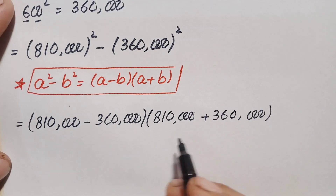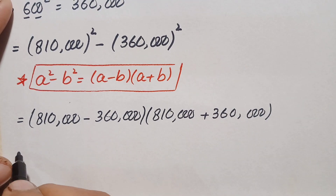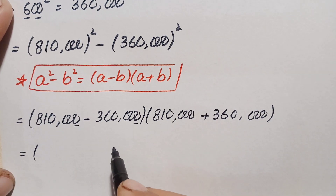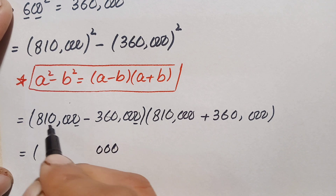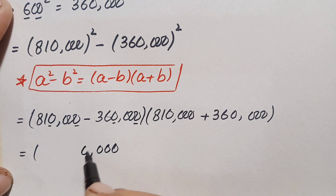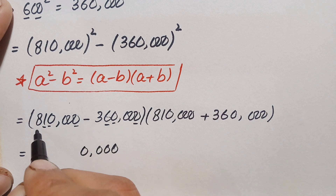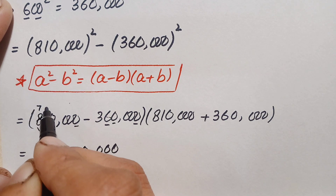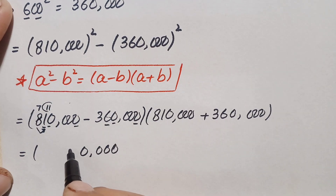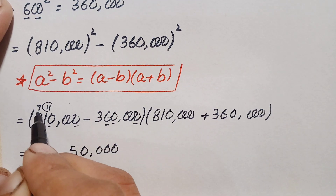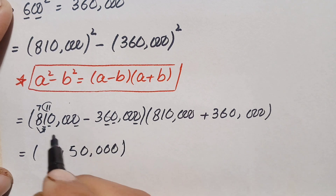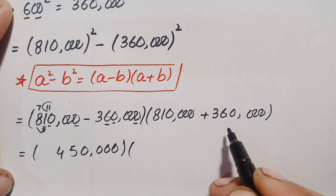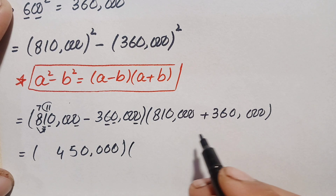Now we subtract these two numbers. Starting from the rightmost position: 0 minus 0 is 0 for the first four places. Then 1 minus 6 is not possible, so we borrow from the 8, making it 7, and 11 minus 6 is 5. Then 7 minus 3 is 4. So the subtraction gives 450,000.